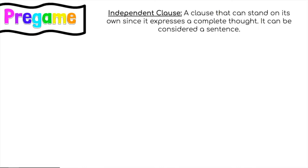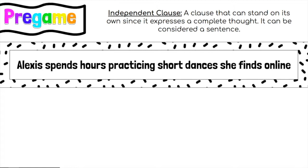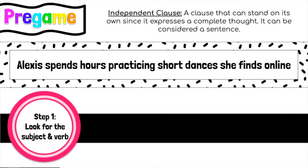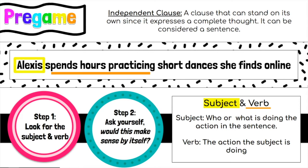Before we get started we need to look at some pre-game stuff. Let's review independent clauses. It's a clause that can stand on its own since it expresses a complete thought — it can be considered a sentence by itself. Here's an example: 'Alexis spends hours practicing short dances she finds online.' In step one we look for the subject and the verb. A subject is who or what is doing the action in the sentence, and the verb is the action the subject is doing. The action here is spending hours practicing short dances — who's doing it? Alexis. Subject, verb. You have to ask yourself: would this make sense by itself? Yes, we don't need any more information. That's an independent clause.